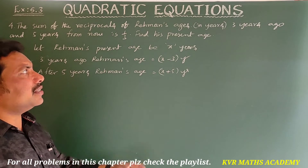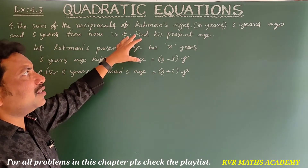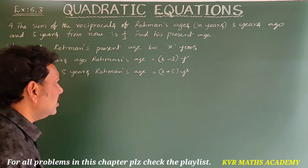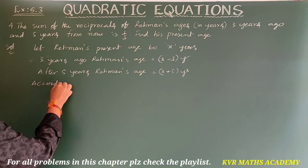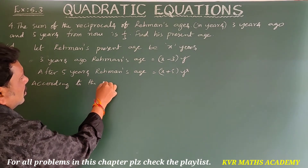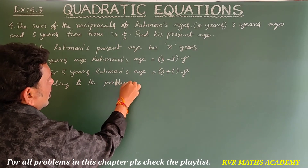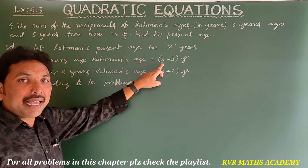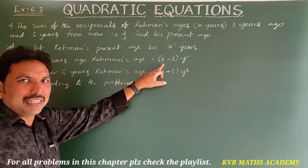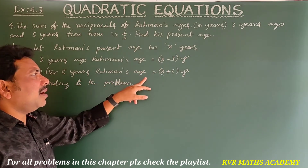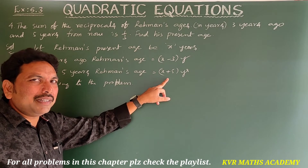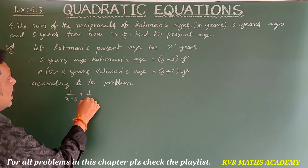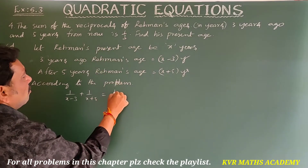According to the problem, the sum of the reciprocals of Rahman's ages three years ago and five years from now is 1/3. The reciprocal of x minus 3 is 1/(x minus 3), and the reciprocal of x plus 5 is 1/(x plus 5). So the equation is: 1/(x minus 3) plus 1/(x plus 5) equals 1/3.